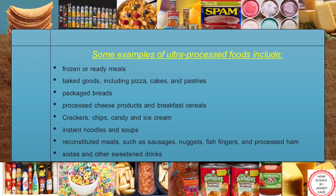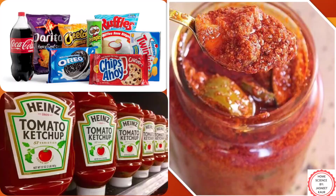Some examples of processed food include frozen foods, baked goods including pizza, cakes and pastries, packaged breads, processed cheese products and breakfast cereals, crackers, chips, candies and ice creams, instant noodles and soups, reconstituted meats such as sausages, nuggets, fish fingers and processed ham, as well as sodas and other sweetened drinks.